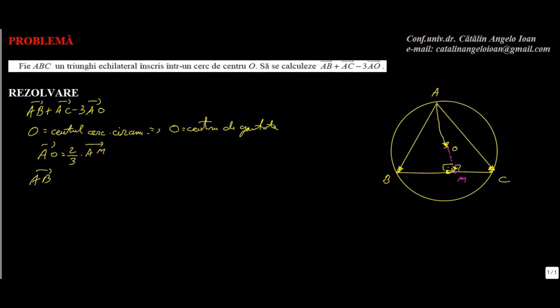Avem că AB plus BM egal cu AM, care este 3 pe 2 ori AO. De asemenea pe partea cealaltă, vom avea AC plus CM egal tot cu AM, adică egal tot cu 3 pe 2 ori vectorul AO. Haideți să tragem linia, să le adunăm. Ce obținem? AB plus AC plus BM plus CM egal cu 3 pe 2 AO plus 3 pe 2, adică 3 ori AO.